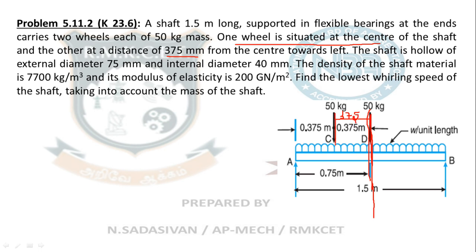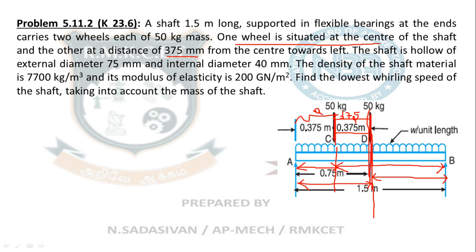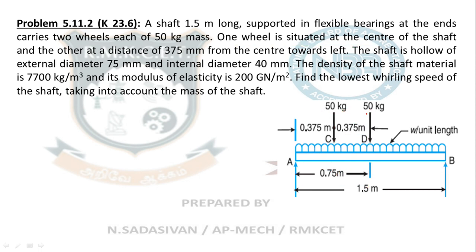Please be very careful about how the distance is given. You have to always calculate A and B from the left only. This distance is A and the remaining is B for the first mass. Similarly, for the second mass, this is A and this is B. A2 and B2 happen to be equal in this problem.